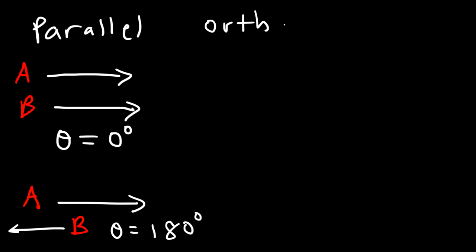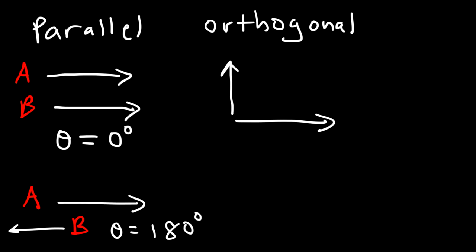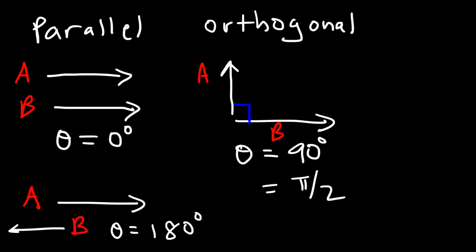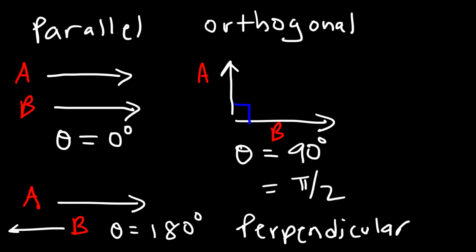Two vectors are orthogonal if they meet at right angles. So this is vector A, and this is vector B. As you can see, the angle between them is a right angle, or 90 degrees, which in radians corresponds to pi over 2. So basically, if two vectors are orthogonal, it means that they are perpendicular to each other. Anything else — if they're not parallel or not orthogonal — then the two vectors are neither parallel nor orthogonal. So any angle other than 0, 90, or 180, you would say neither.